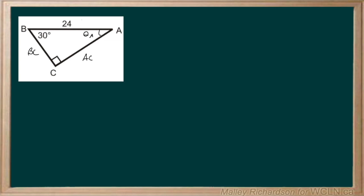As we can see, we have our knowns of 30 degrees and our side length of 24. So using these two numbers, let's solve for our side length of AC.